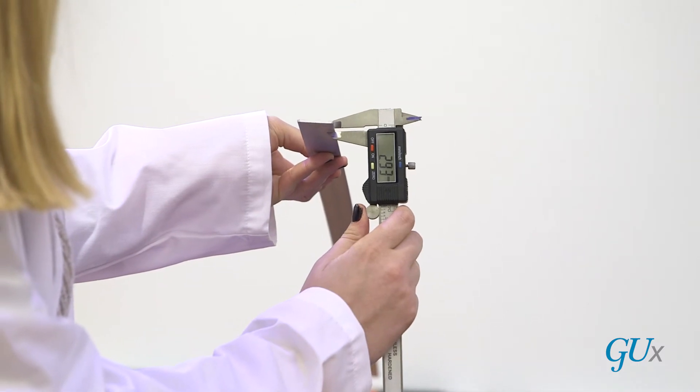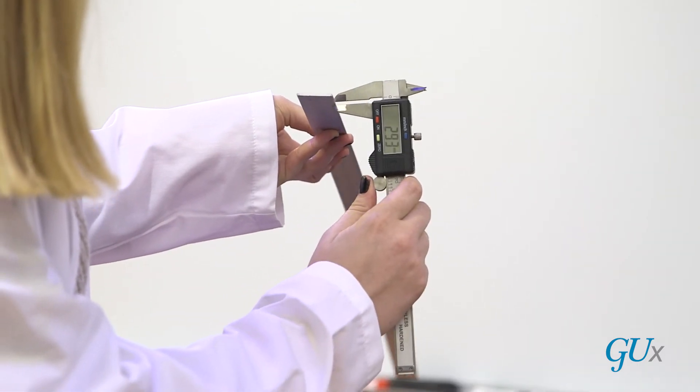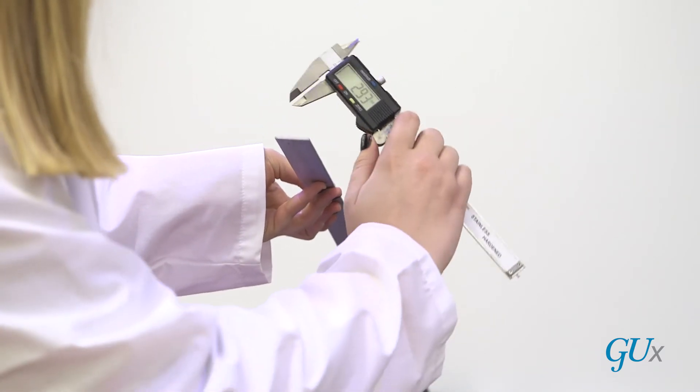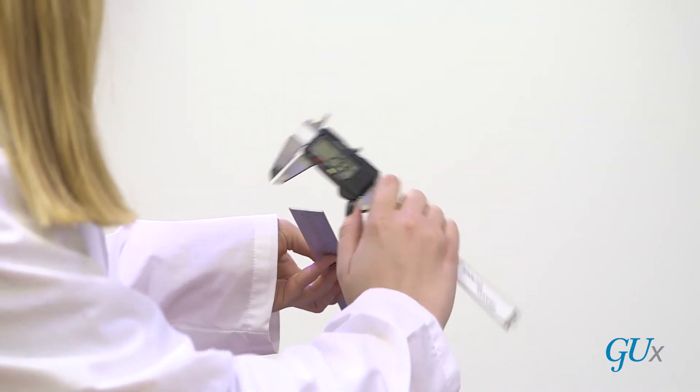First thing we need to do is figure out just how wide is that meter stick. What is its thickness? We use this caliper as a measuring device to determine it and you can see the width is about two millimeters.